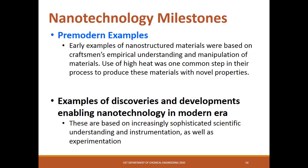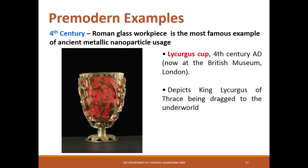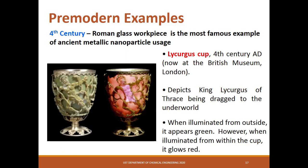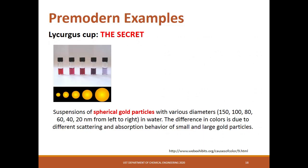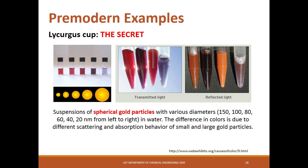Nanotechnology has been present and was utilized before it was known. The history of nanomaterials is divided into two: the pre-modern examples, and the examples after the discoveries and developments that enable nanotechnology in the modern era. Pre-modern examples are nanomaterials produced based on craftsmen's empirical understanding and manipulation of materials such as heating. One example is the Lycurgus Cup. When illuminated and observed on the same side, it reflected the color green. While when illuminated and observed on the opposite side, it transmitted the color red. The secret is the dispersed gold nanoparticles on the material, where even a minute amount can yield the dichroic effect.